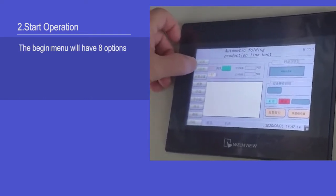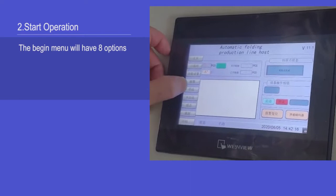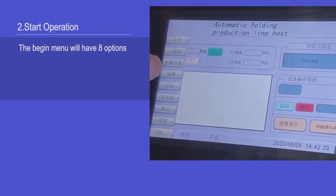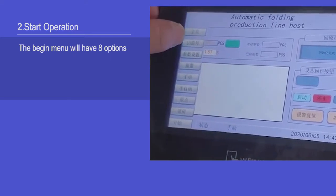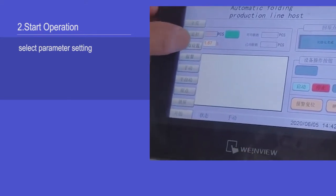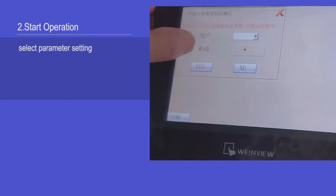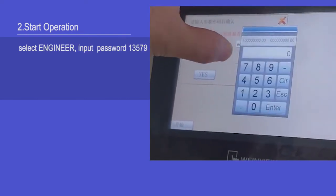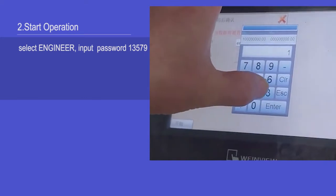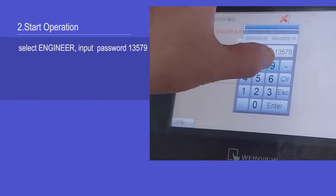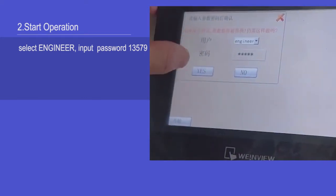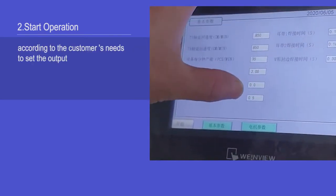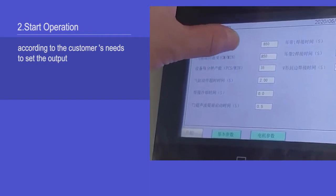The begin menu will have eight options. Select parameter settings, select engineer input password 13579, choose yes. According to the customer's needs, set the output.